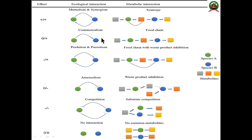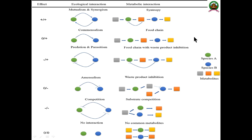In synergism, metabolites produced by one organism are utilized and converted by another, and that converted metabolite is used by another organism, forming a proper syntrophy. In commensalism, one organism is not getting benefited but the next one is. One organism produces metabolic requirements for the second organism, but the second organism does not give anything back — yet this first organism is not harmed. The second organism gets benefited. This is known as commensalism.